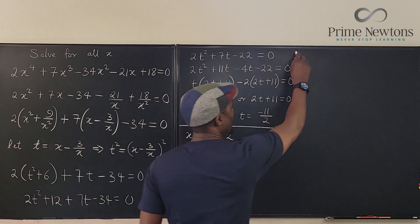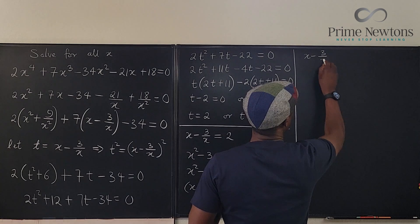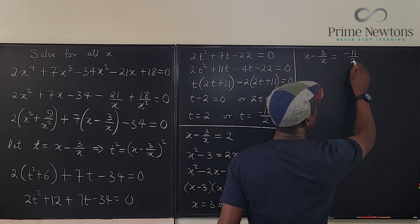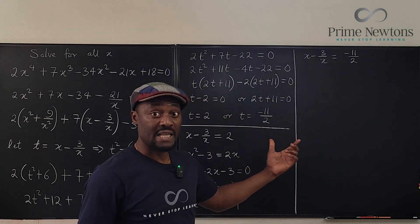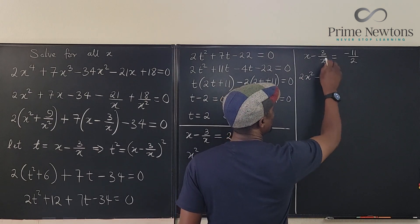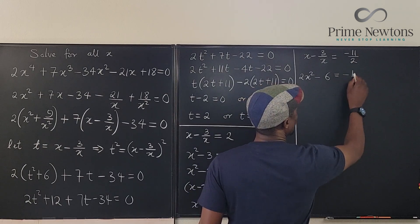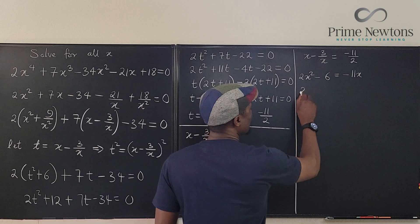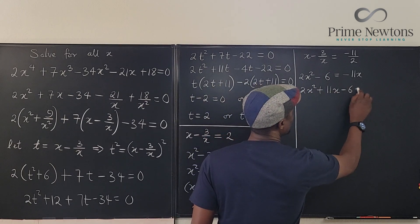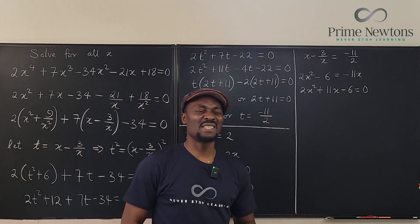So the next thing is to use the second part of it. So we also know that x minus 3 over x will be equal to negative 11 over 2. So we multiply everywhere by 2x to get rid of the two denominators. So this is going to be 2x² minus 6 equals negative 11x. So you have 2x² plus 11x minus 6 equals 0.